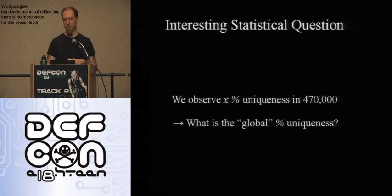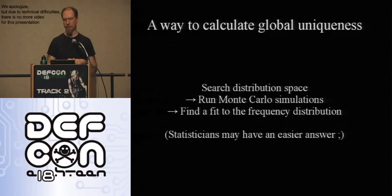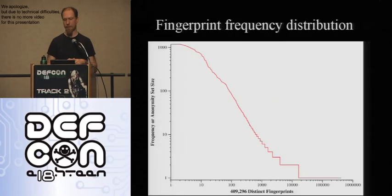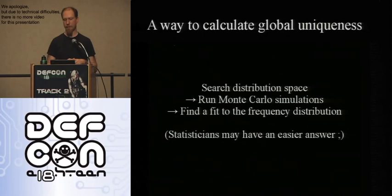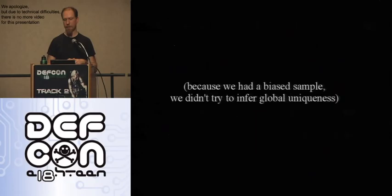An interesting statistical question is: sure, you saw 84–94% uniqueness in your dataset of 500,000 people, but would browsers be less unique if you had data for the full 1 to 2 billion web users? I have a theory for solving it using Monte Carlo simulations: try a hypothesis probability distribution, run it through a simulation, and see if it produces a graph that looks like ours. But we didn't pursue this because our privacy-conscious user dataset isn't meaningfully representative of the full browser population. If someone has a less biased dataset, they could run this.